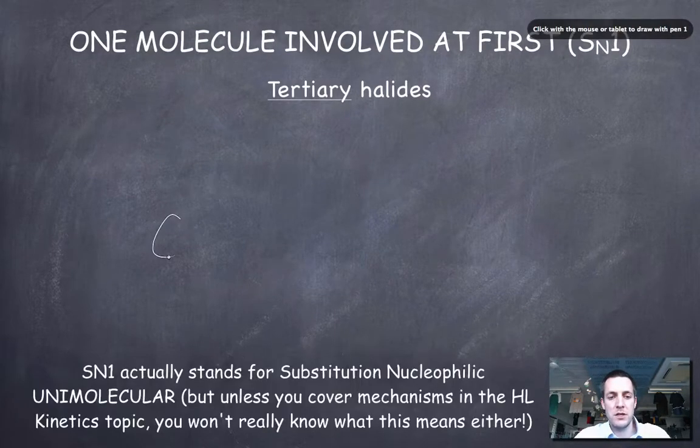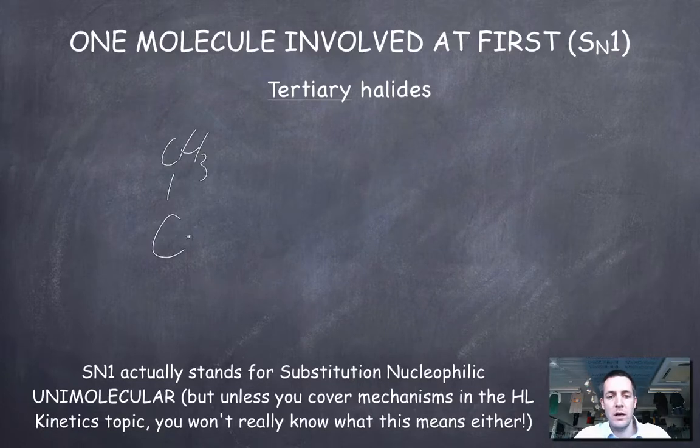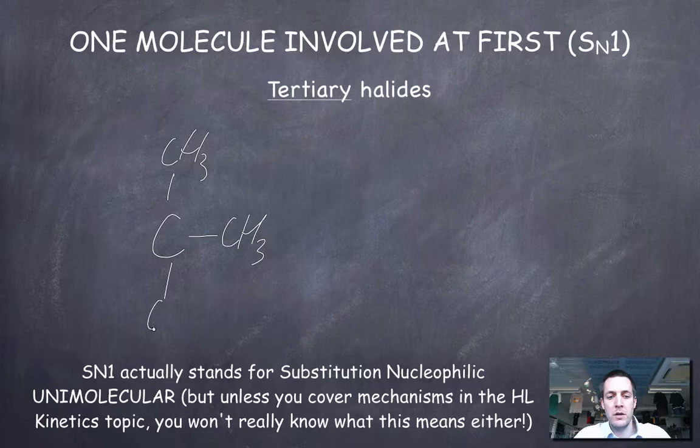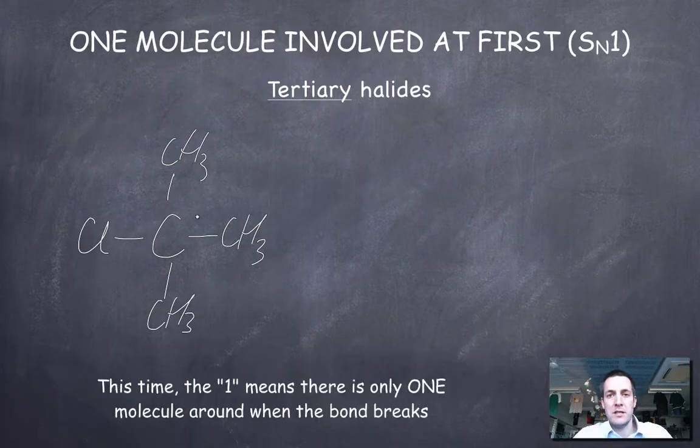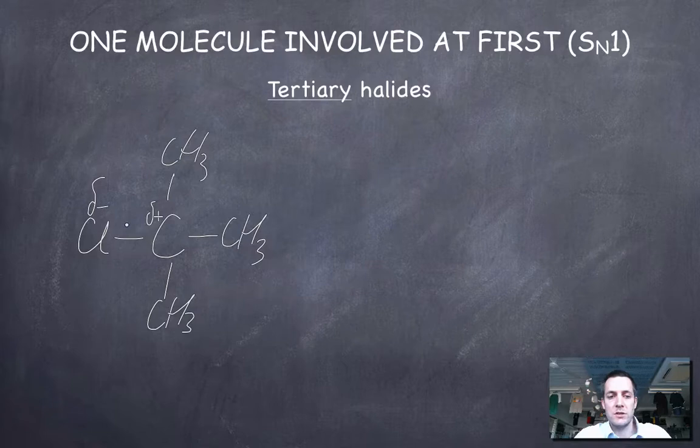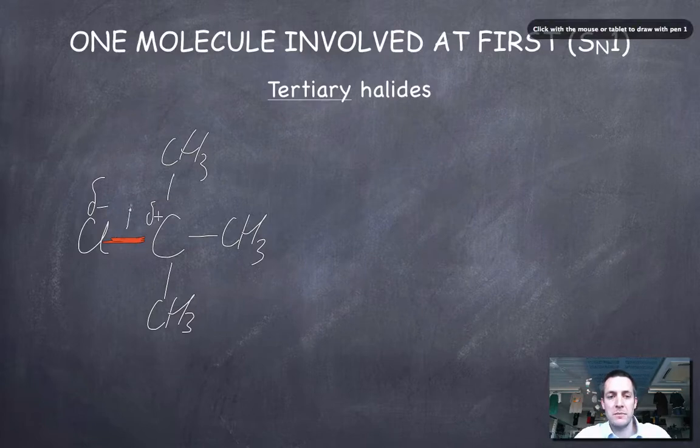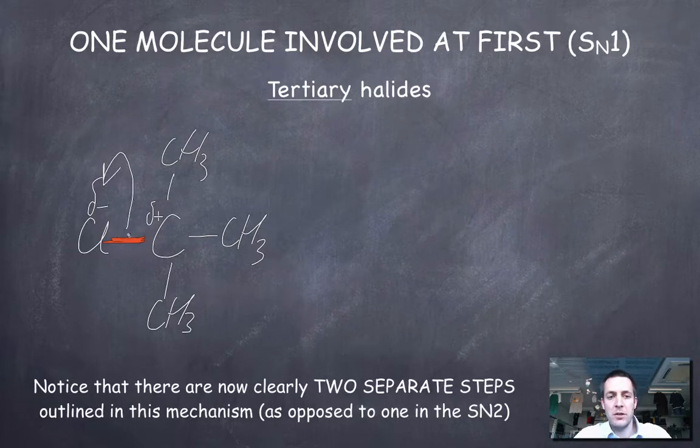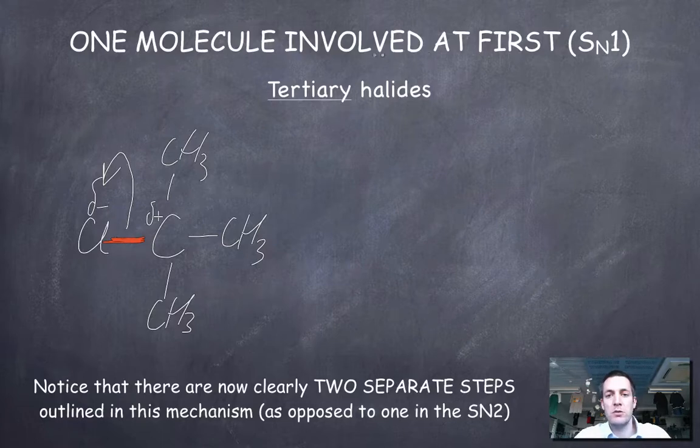Now if I drew myself a tertiary halide, let's say maybe we could have 2-methylpropane with a chlorine atom attached. Now this is going to react in a very different way. It's hard for the nucleophile to get in here because of these great big groups. So the first thing that happens is that the chlorine, which is pulling the electrons over to itself—remember the red bond on the previous diagram was the one that was going to break—so let's make it red again. We're going to show this bond breaking first. So that bond can break without any involvement of the hydroxide ion. So that's why we're saying there's only one molecule involved at first and it's called SN1.